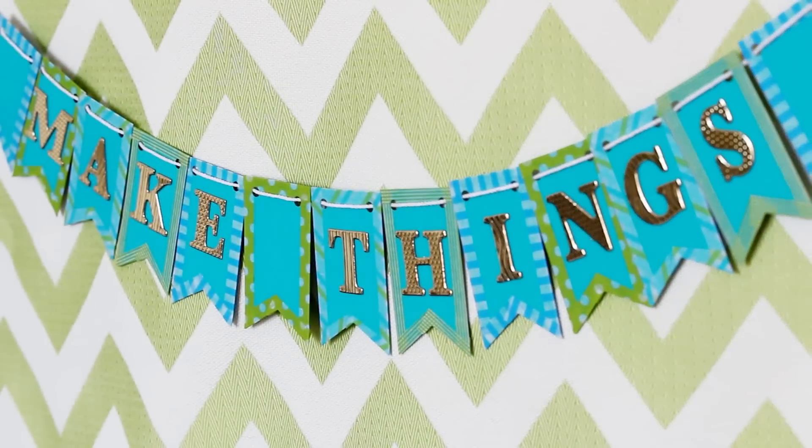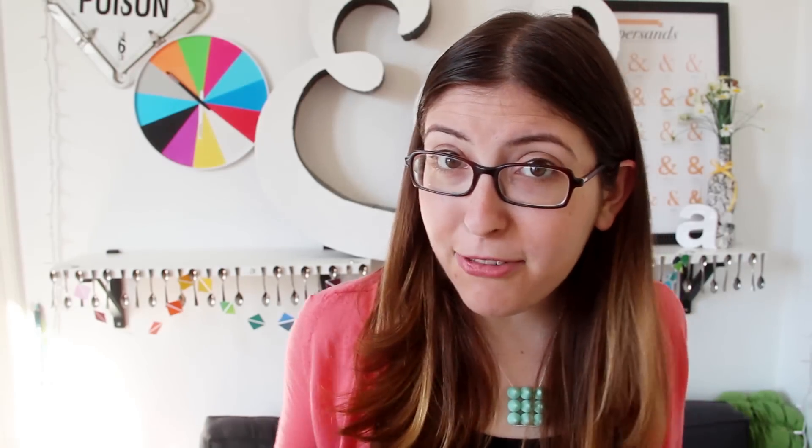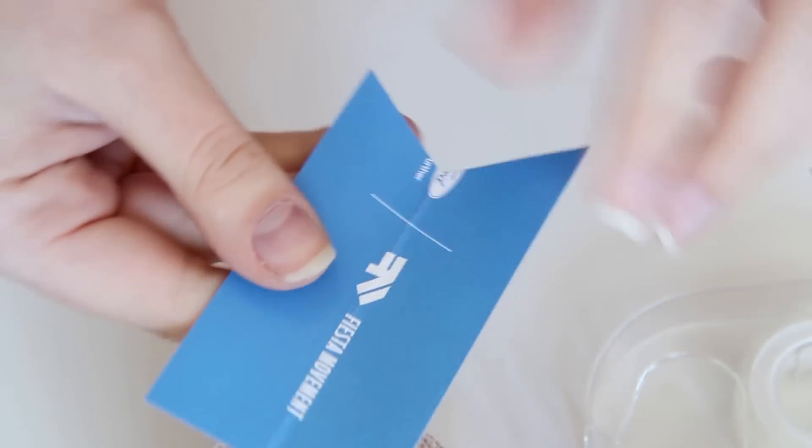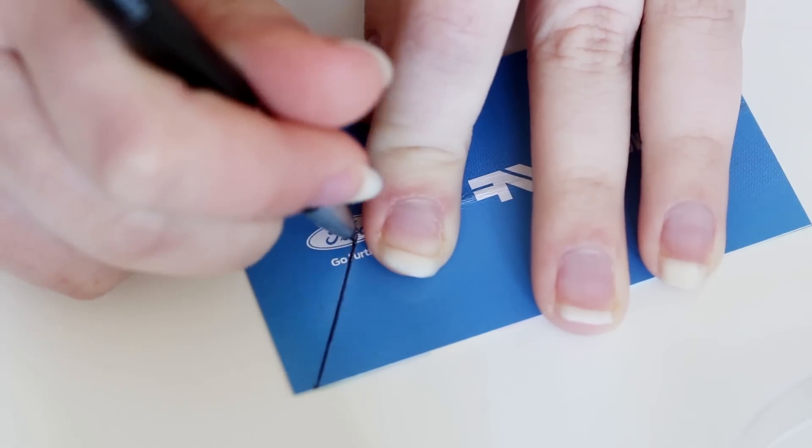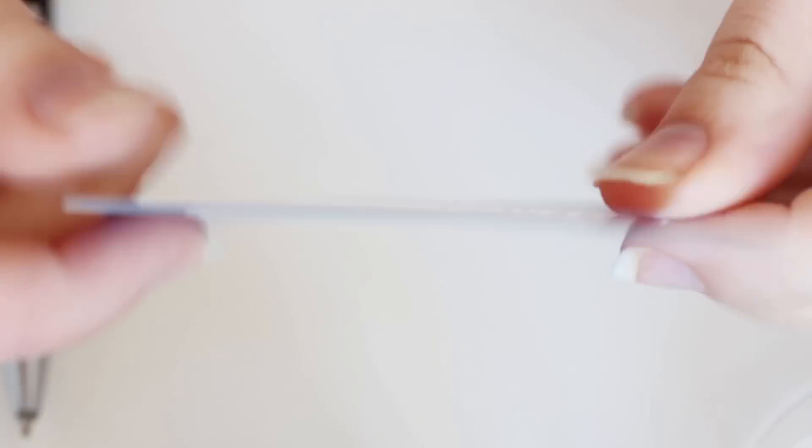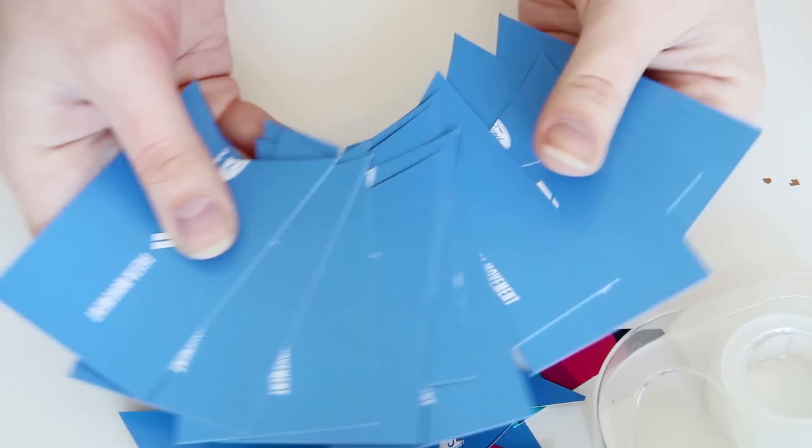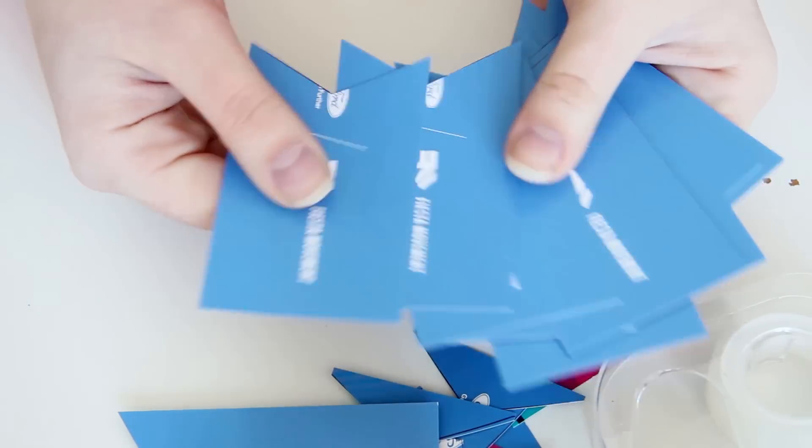And now the third thing that I'm going to make is this really cute mini banner. I'm going to start by folding one of the business cards in half and then cutting a triangle out of the bottom to get the perfectly symmetrical shape that I want. Then trace and cut this shape out from the next business card and then use that one, which is flat, as the pattern for all of the rest. Repeat this until you have as many shapes as you would like for your banner.